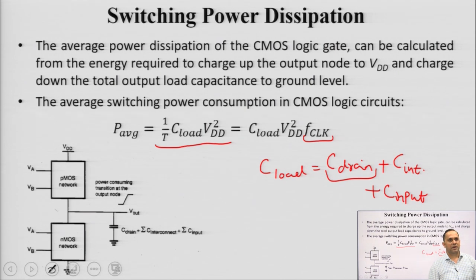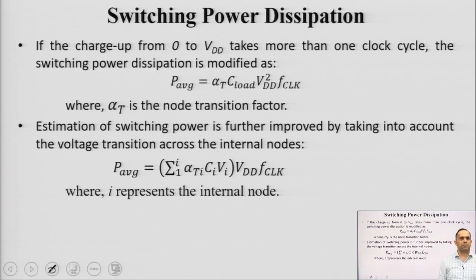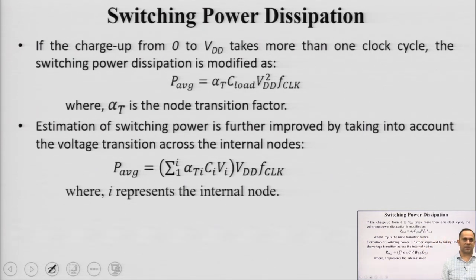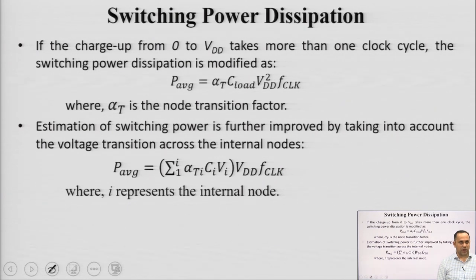This is a simple way of calculating switching power dissipation, but circuits are more complex. If the charge from 0 to V_dd takes more than one clock cycle, the switching power dissipation is modified by a factor alpha, where alpha is the node transition factor. It basically measures how many clock cycles it takes for your load to charge from 0 to V_dd. If it happens in one or fewer clock cycles, alpha equals 1; as the number of clock cycles increases, alpha increases accordingly.